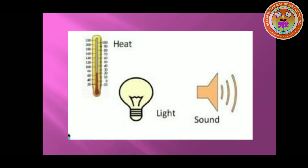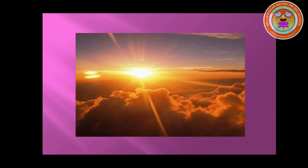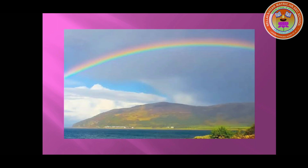For example, heat, light, sound — these are the examples of non-matter. Why are these called non-matter? Because these things do not have mass and do not occupy space. Sunlight is also another example of non-matter, because sunlight also does not have mass and does not occupy space. Rainbow is another example of non-matter, because rainbow also does not have mass and does not occupy space. So it is called non-matter.